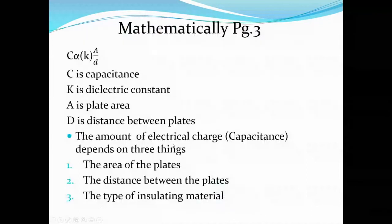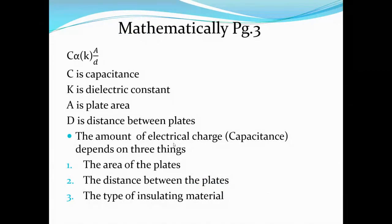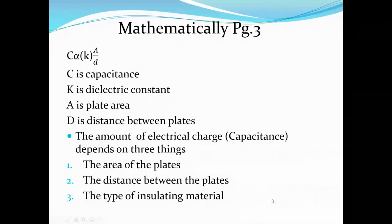Looking at the math associated with a parallel plate capacitor — a simple theoretical model. Capacitance is made up of a dielectric constant, the plate area, and the distance between the plates. The amount of charge or capacitance depends on these three things: the area of the plate, the distance between them, and the type of insulating material, which is another way to consider a dielectric — it's either a good conductor or a bad conductor, or a good insulator or a bad insulator. The dielectric is this insulating material.